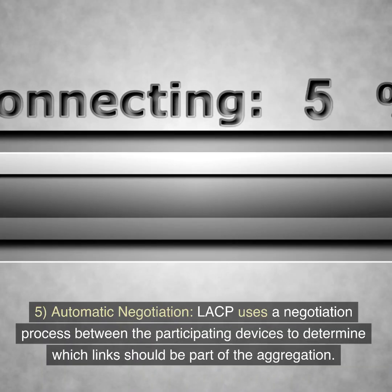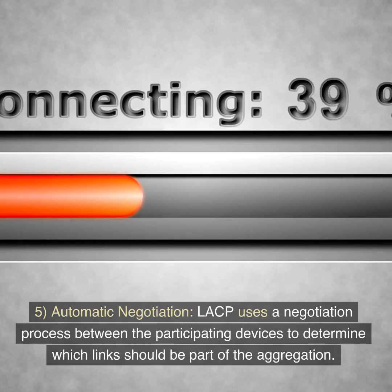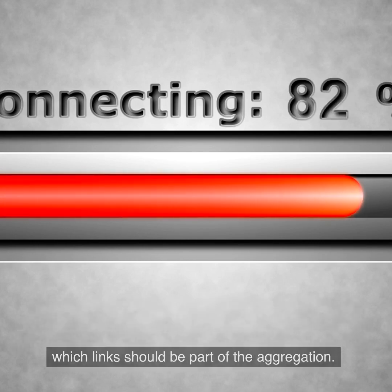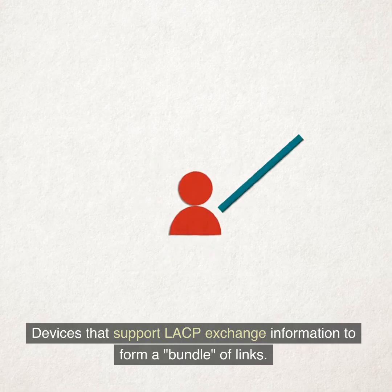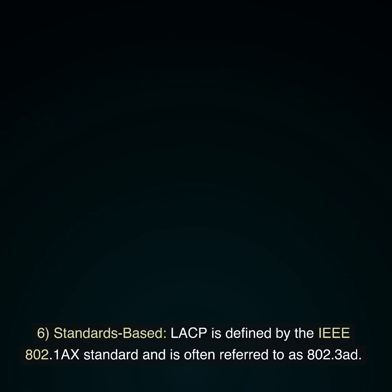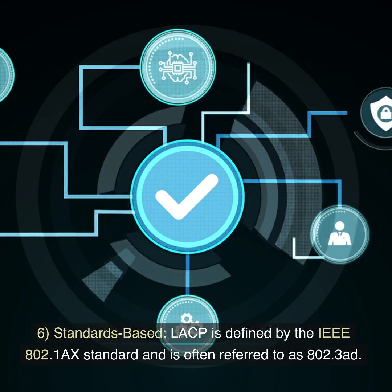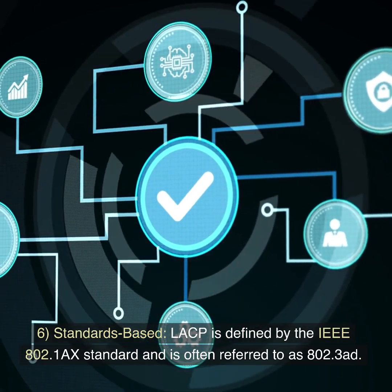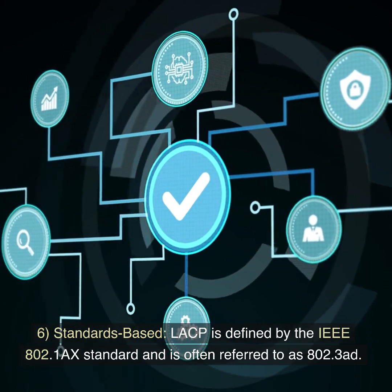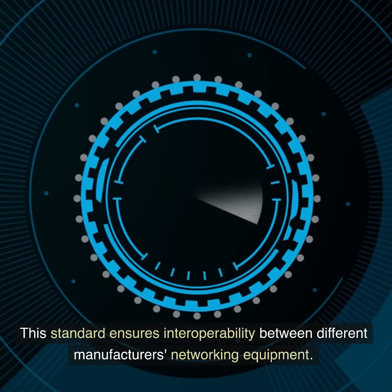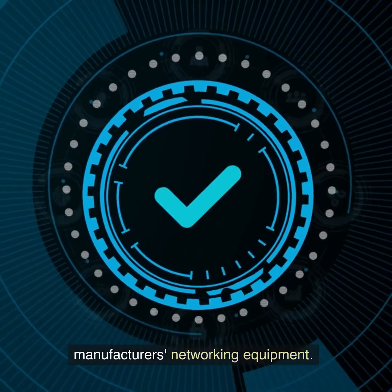5. Automatic Negotiation: LACP uses a negotiation process between the participating devices to determine which links should be part of the aggregation. Devices that support LACP exchange information to form a bundle of links. 6. Standards-based: LACP is defined by the IEEE 802.1 AX standard, often referred to as 802.3AD. This standard ensures interoperability between different manufacturers' networking equipment.